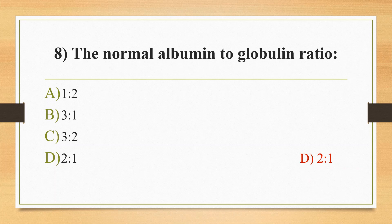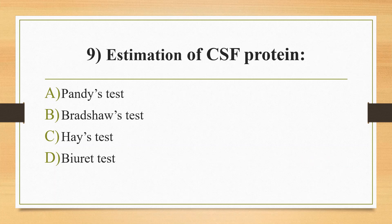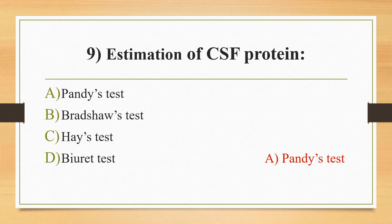Ninth question: estimation of CSF protein — option A Pandy's test, option B Bradshaw's test, option C Hay's test, option D biuret test. The answer is option A, Pandy's test. In Pandy's test, globulin and albumin are precipitated by a saturated solution of phenol in water. Normal CSF protein is 15 to 60 milligrams per deciliter.